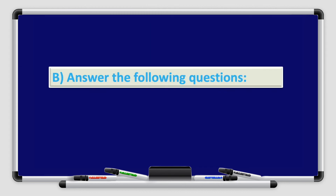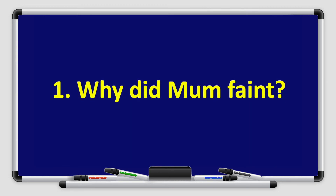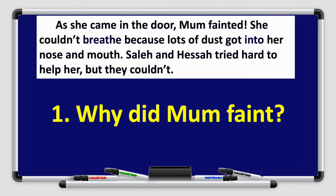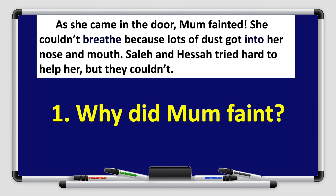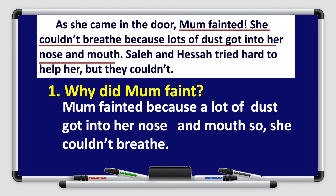Now answer the following questions. Number one: Why did mom faint? Go back to the paragraph — mom fainted because lots of dust got into her nose and mouth, so she couldn't breathe. Great job, boys and girls.